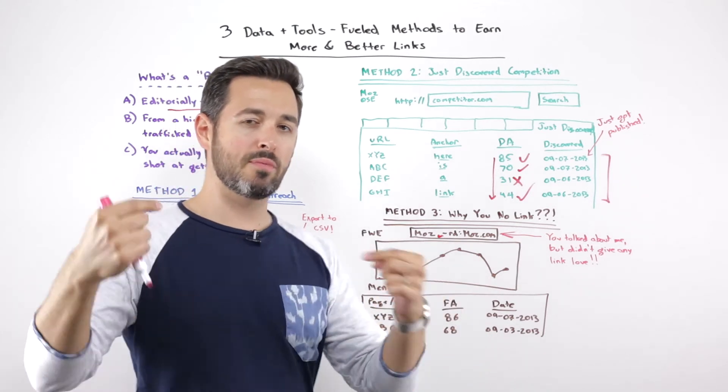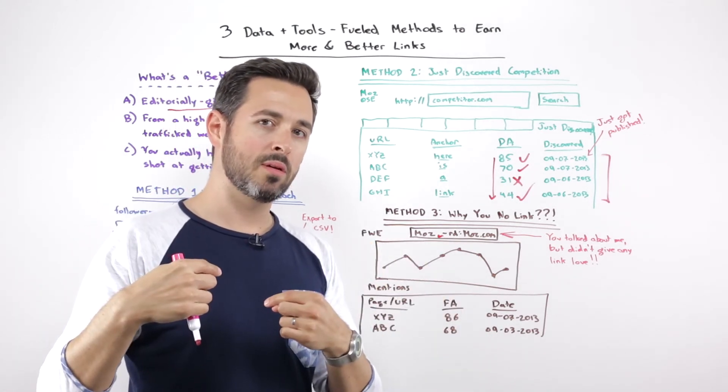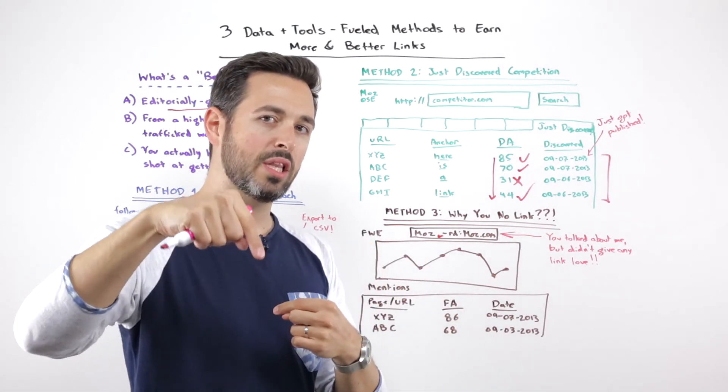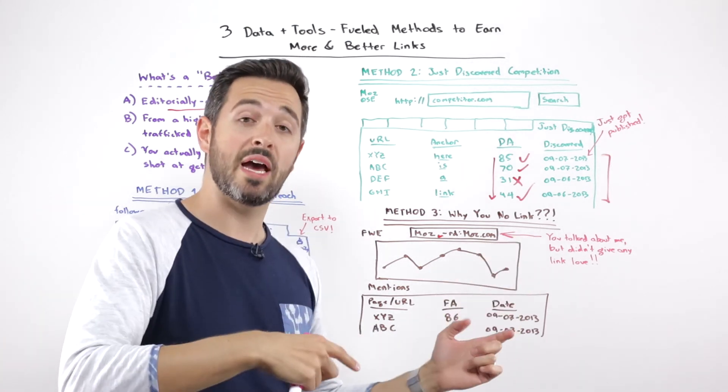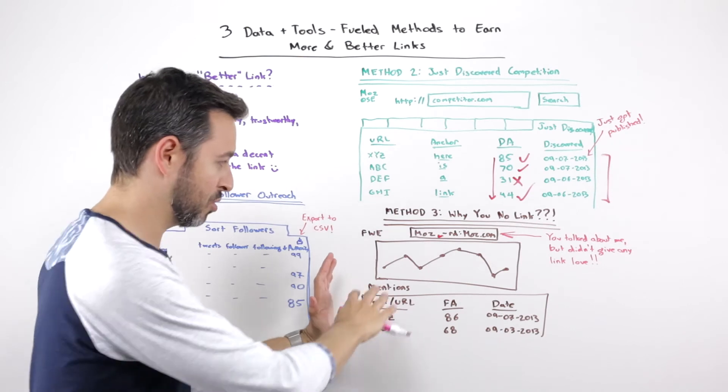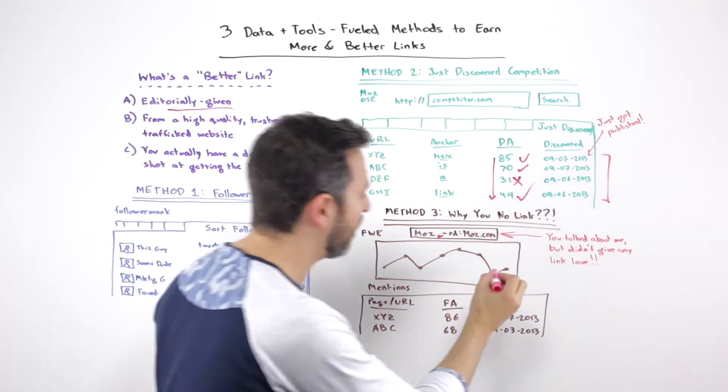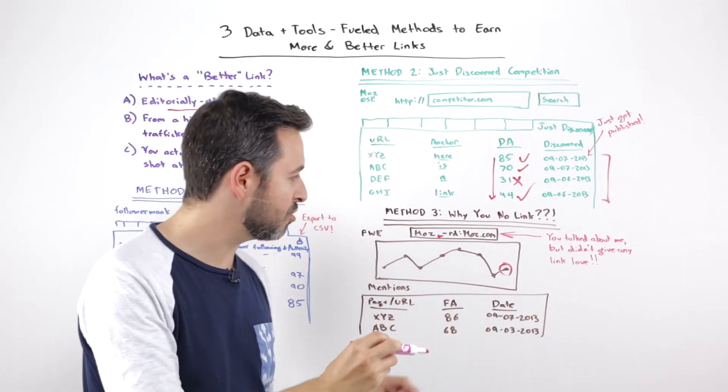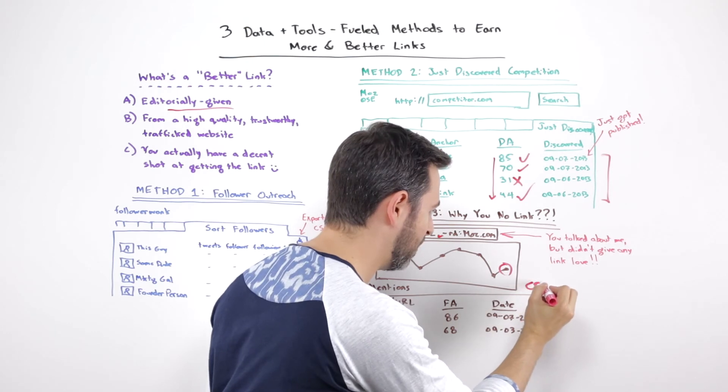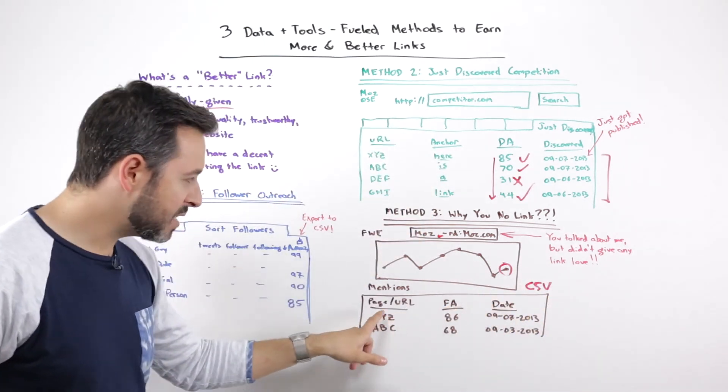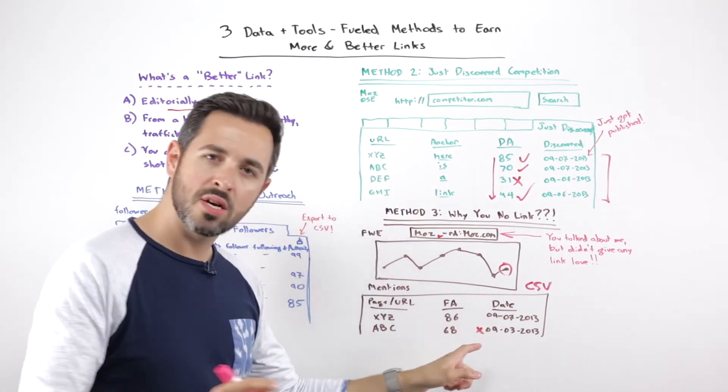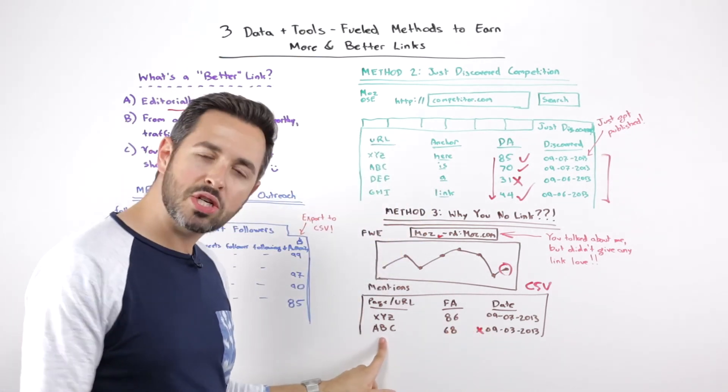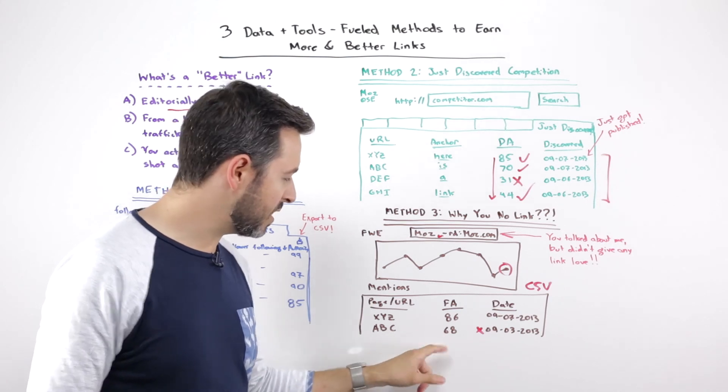The reason this works so well is because I'm essentially saying, show me people who have mentioned my brand name, Moz, but are not linking to any page on my site. And show me the ones that have just done that, because this is Fresh Web Explorer, so it's going to show me recent stuff. And then if I want, I can click on a specific day or those kinds of things. I can export the CSV over here. But basically, I look at these and go, huh, interestingly. Okay, so this is four days old. They mentioned Moz, but they didn't link to us.